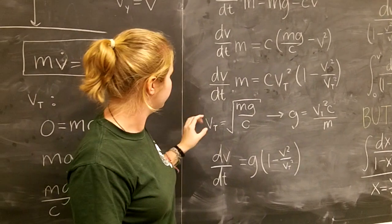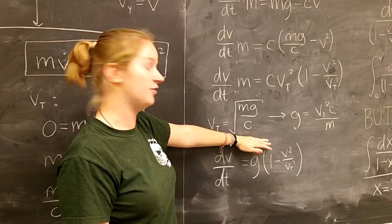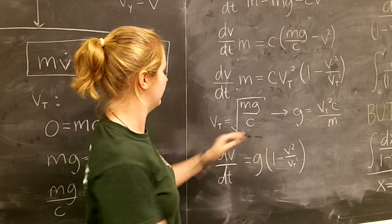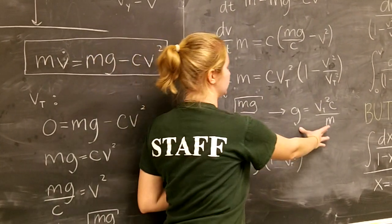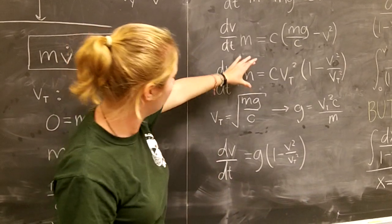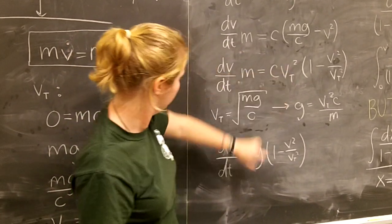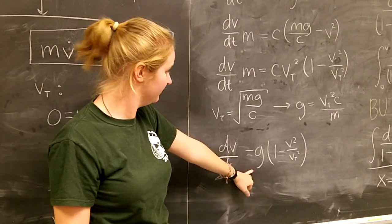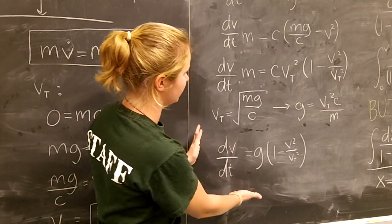We know that we have our equation for terminal velocity, that if we solve for g in this equation, g is equal to vt squared C over m. So if we divide this m over, we can just substitute that as a g. So that is a very clean, simple looking equation.